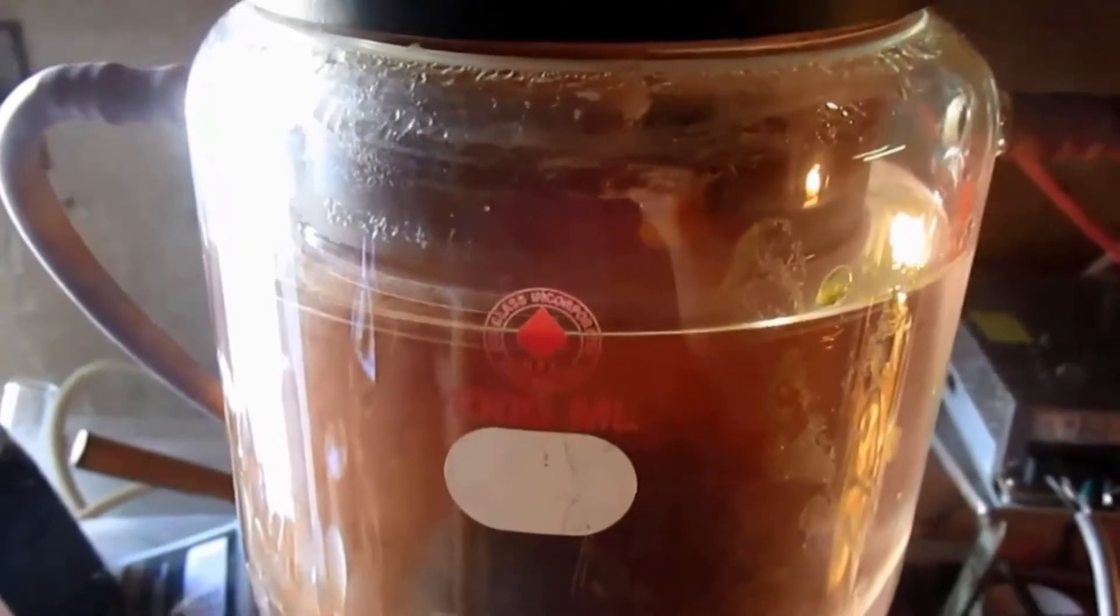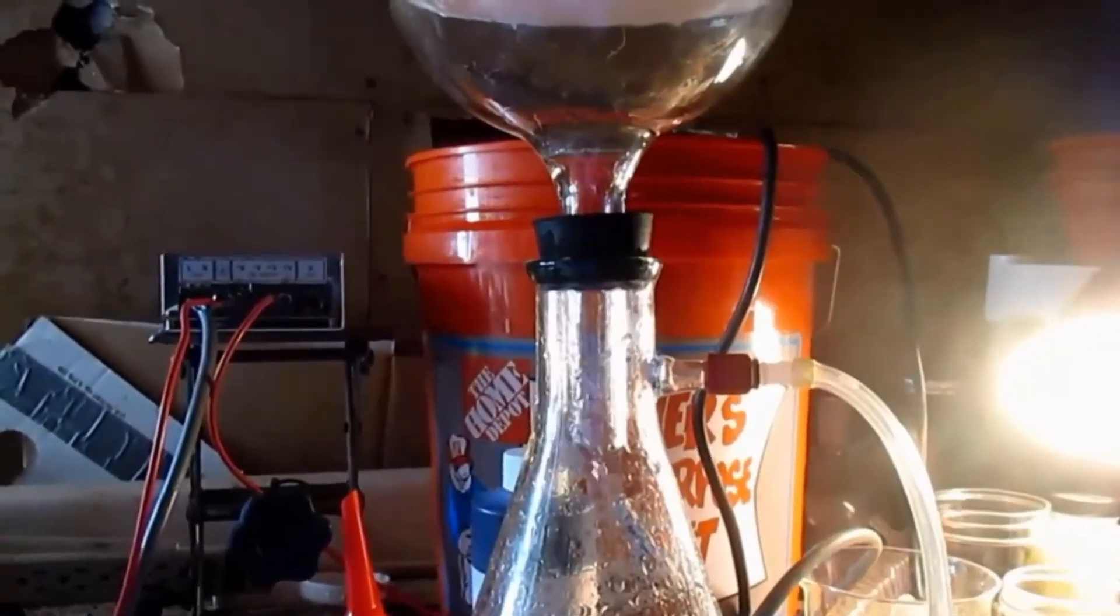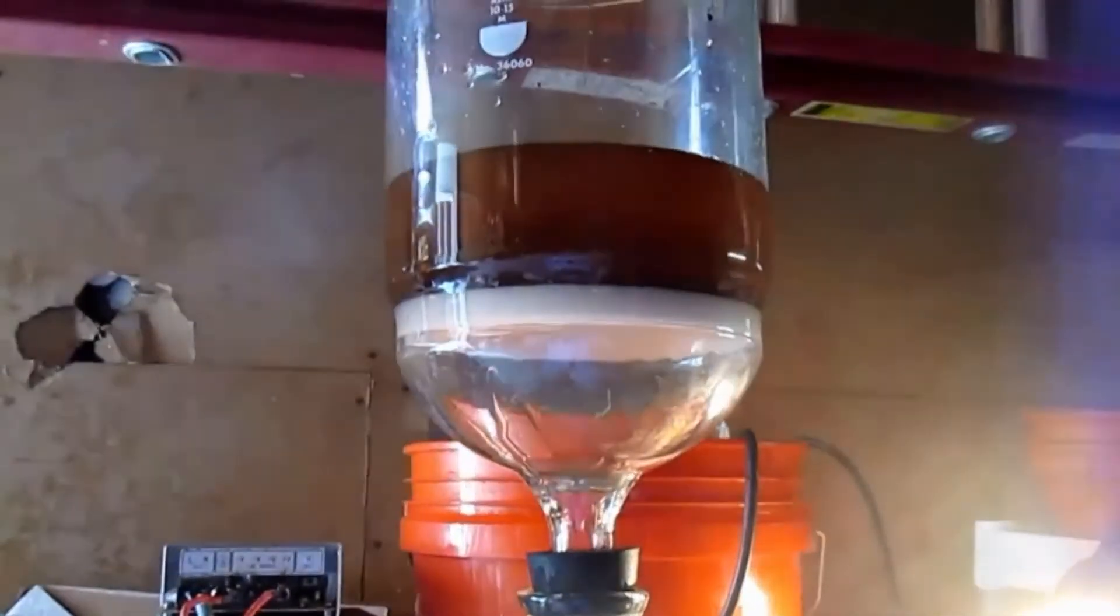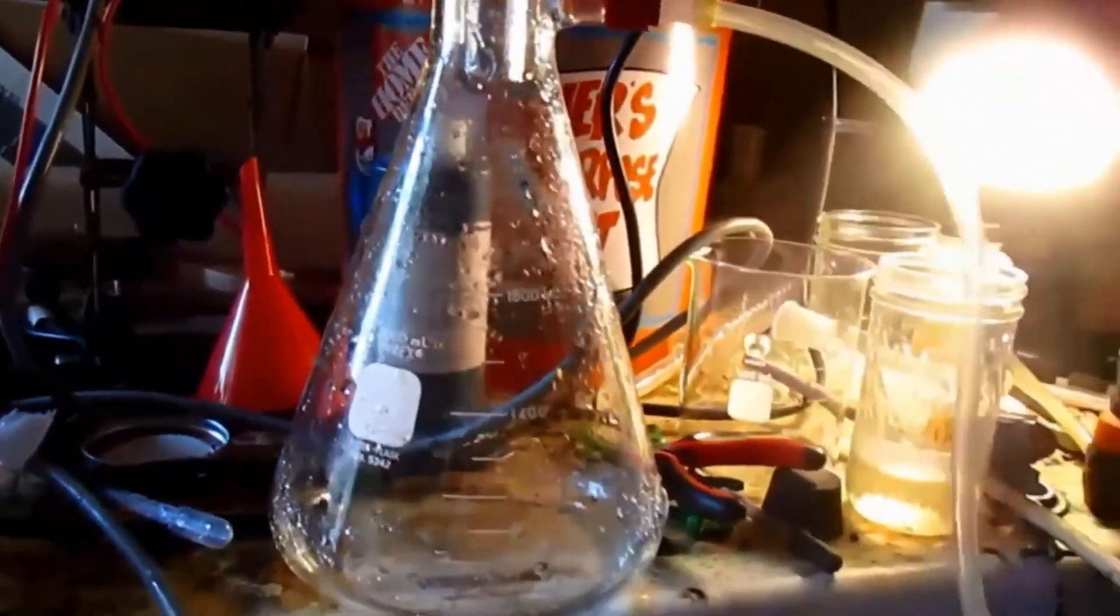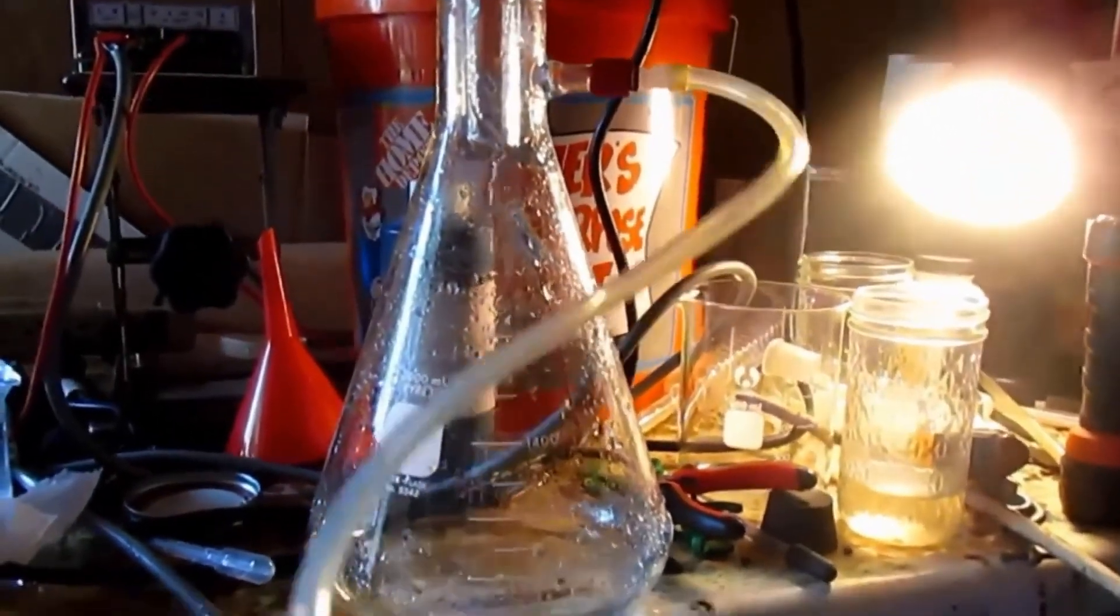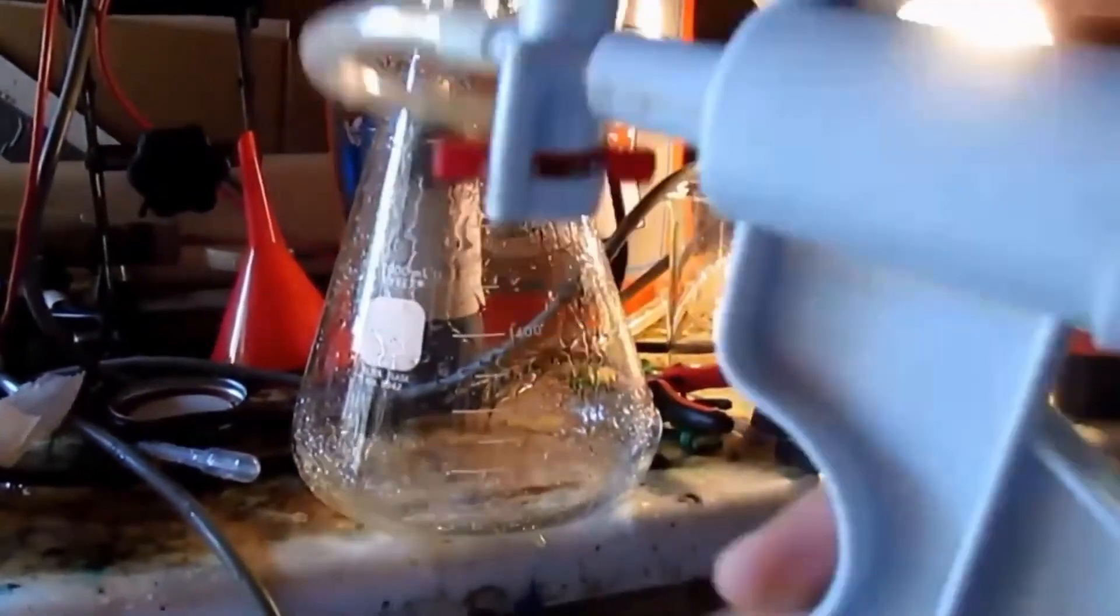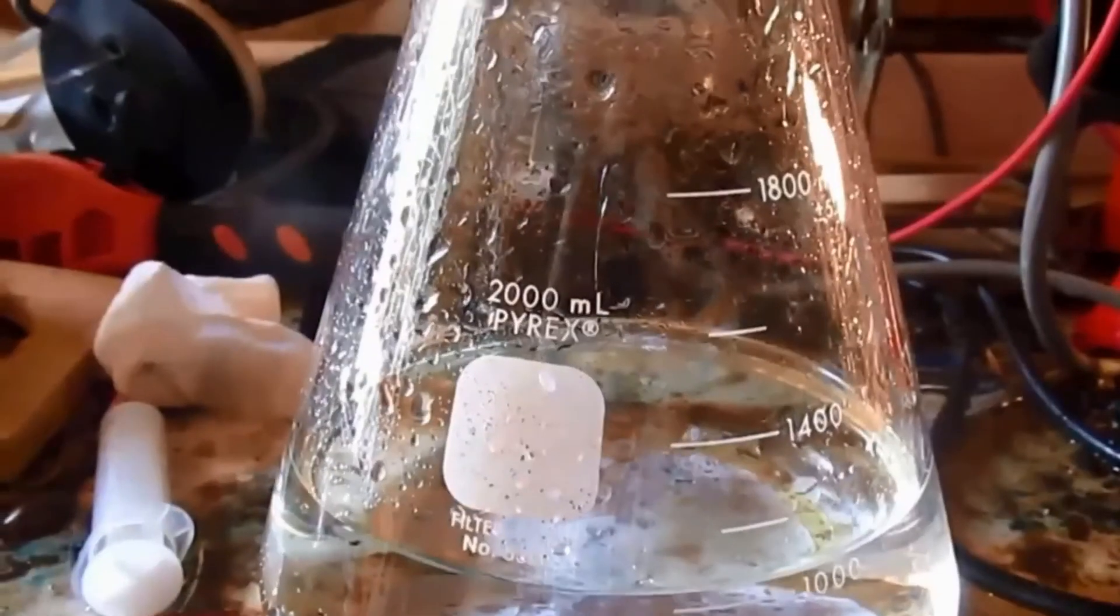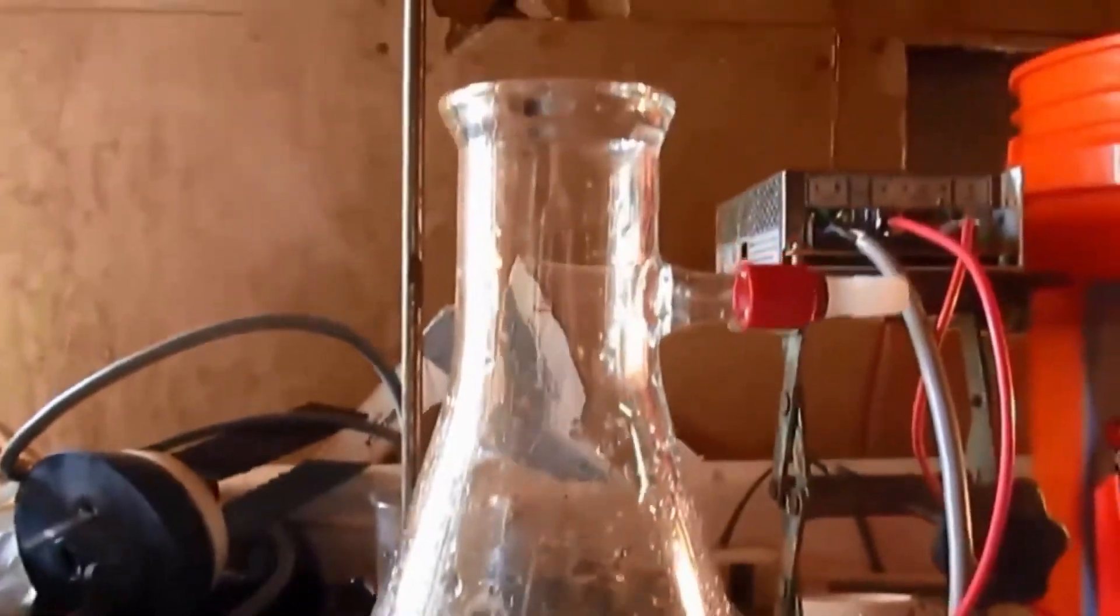The solution was transferred into a large size Buchner funnel. It is now ready for vacuum filtration to remove the insoluble lead dioxide particles. After filtration, this is the result: a clear solution of mostly sodium perchlorate.